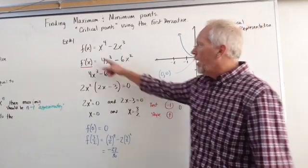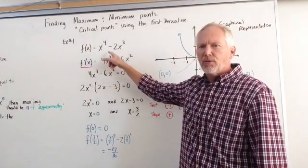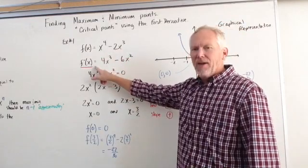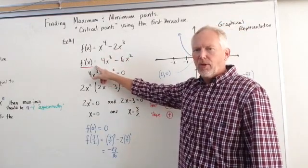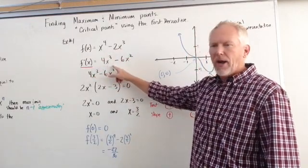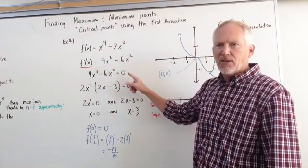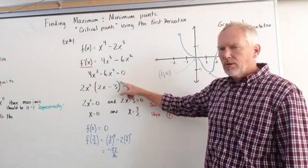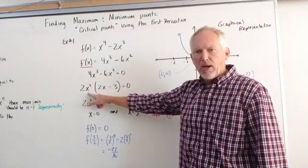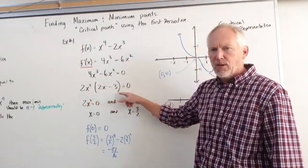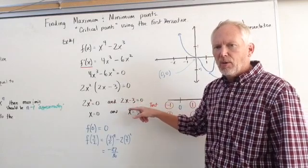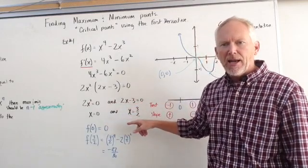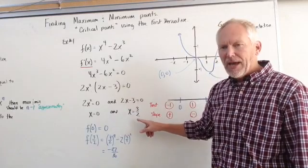Example number one. We have f(x) is equal to x to the fourth minus 2x cubed. If we take the first derivative, f prime of x is 4x cubed minus 6x squared. And we set that equal to zero. We can factor out a 2x squared, which leaves us 2x minus 3 equals zero. And we find out that our two zeros are at x equals zero and x equals three halves.